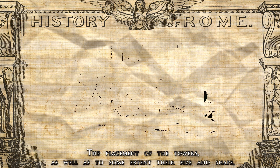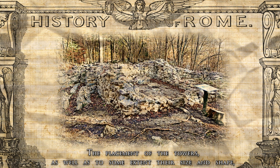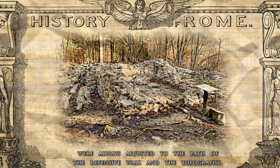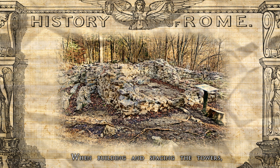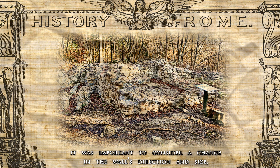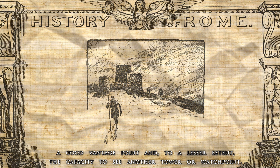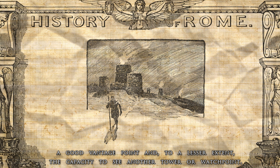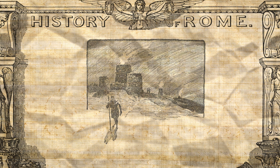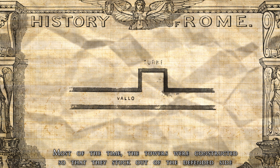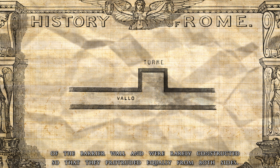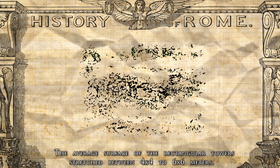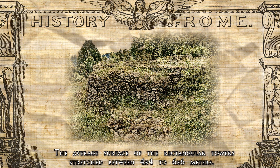The placement of towers, as well as to some extent their shape and size, were always adjusted to the path of the defensive wall and topography. When building and spacing the towers, it was important to consider a change in the wall's direction and size, a good vantage point, and to a lesser extent the capacity to see another tower or watchpoint. Most of the time, the towers were constructed so that they stuck out on the defended side of the barrier wall and were rarely constructed to protrude equally from both sides. The average surface of the rectangular tower stretched between 4x4 to 6x6 meters.